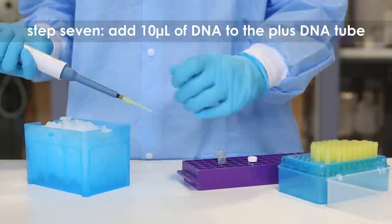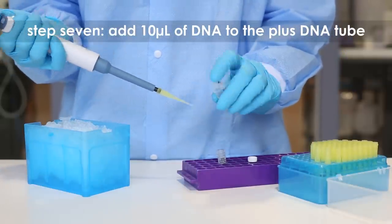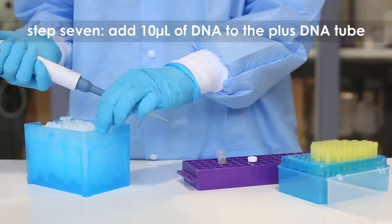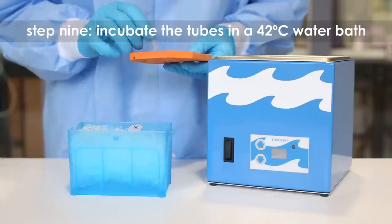Step seven: add 10 microliters of plasmid DNA to the tube labeled plus DNA. Step eight: incubate the tubes on ice for 10 minutes.